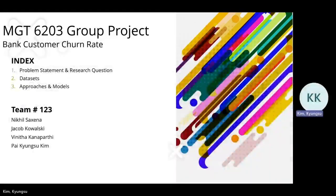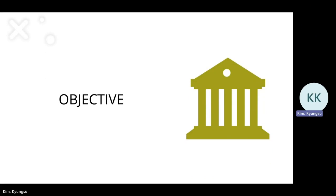Hi from Team 123. We're going to present the group project. Our topic is bank customer churn rate. Our index will be: first, problem statement and research questions; second, data sets; and third, projects and models. Our objective is to make a prediction model for bank customer churn rate and find the significant predictors that affect customer churning.